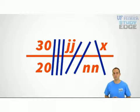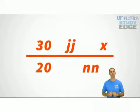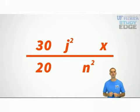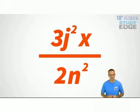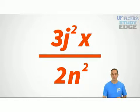Now we're down to J times J, which is J squared. N times N, which is N squared. And 30 over 20 would reduce to three halves, and that would be your final answer.